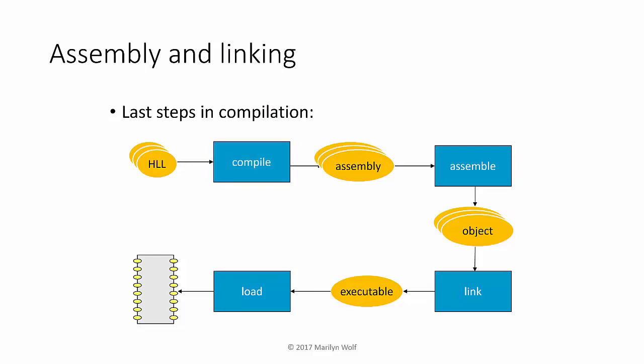Compilation turns a high-level language program into assembly code. The assembler turns an assembly language program into object code. The linker combines several object files into an executable. And the loader loads that executable program into memory. Understanding the role of these different steps helps us design better programs.